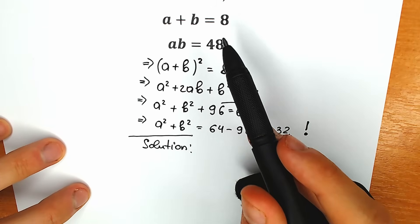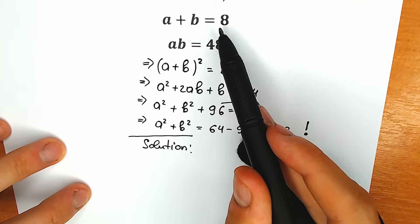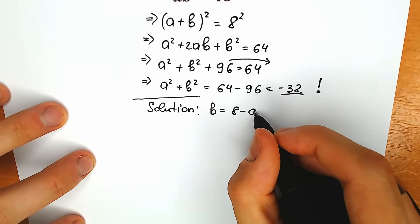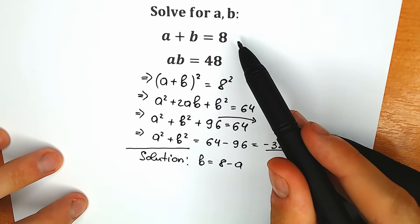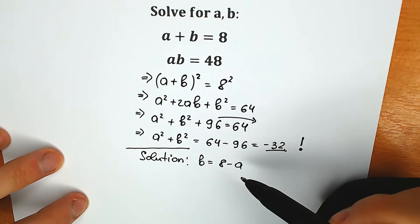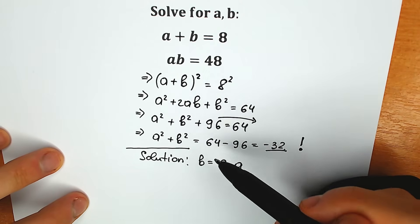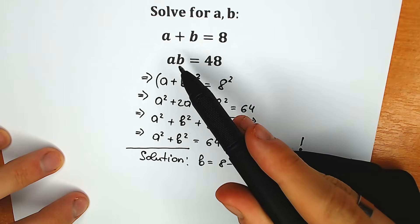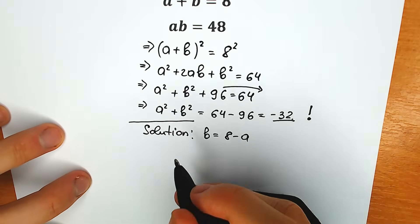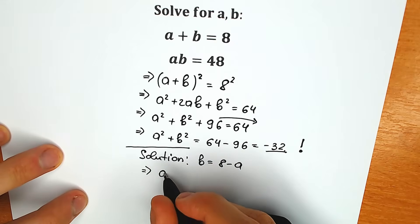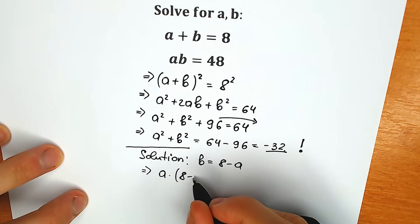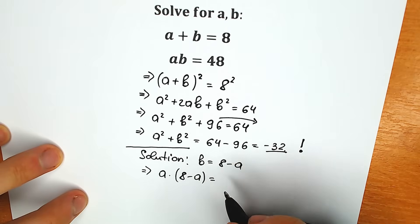From the first equation let's express b. So b equals 8 minus a. Now let's plug this into the second equation instead of b. So as a result we have a times (8 minus a) equal to 48.